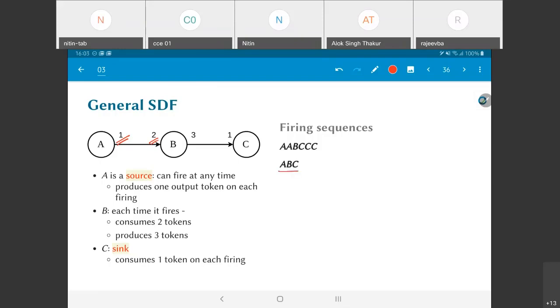Let's look at this firing sequence: A, B, C. What happens? The first element is A, so let's see what happens after A fires. The graph will now look like this. Structurally it doesn't change, the only difference is one token has landed on the A to B edge because A has fired.